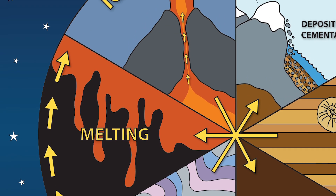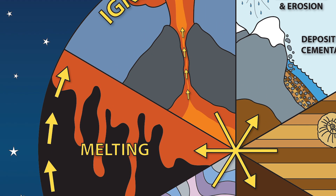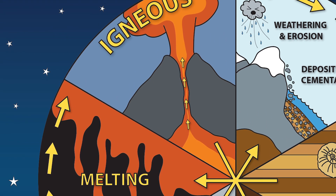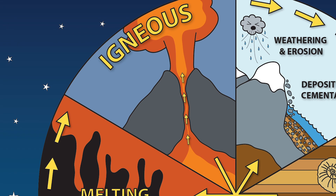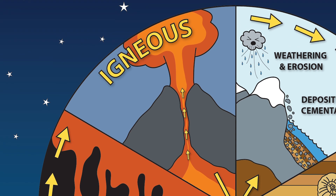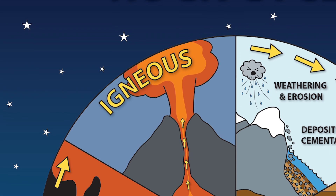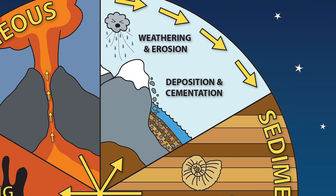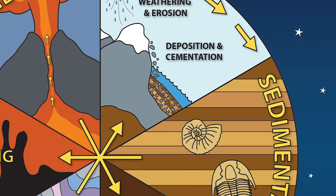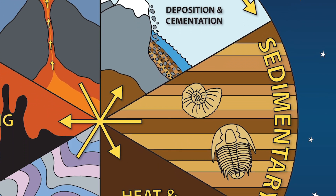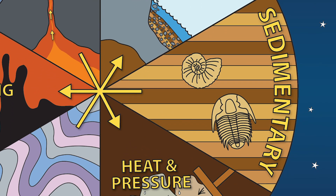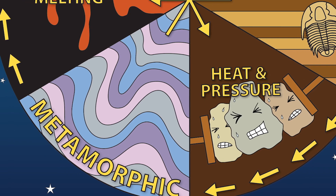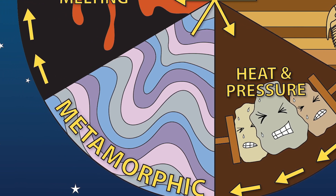Igneous rocks have cooled and solidified from molten rock, such as lava from a volcano or magma beneath the surface. Sedimentary rocks are the result of erosion and deposition. Metamorphic rocks have been changed from high temperature and pressure.